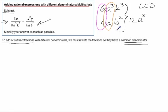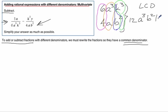Then we've got to look at the b's. If you notice, there's no b's in the first denominator, so we're going to have to add a b up there — it's going to be b squared. And then lastly, we've got this k to the third we've got to put in there. So this is going to be the least common denominator.